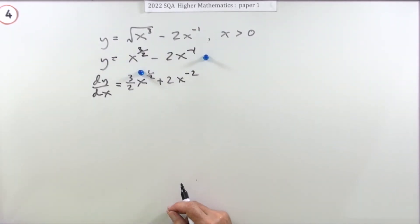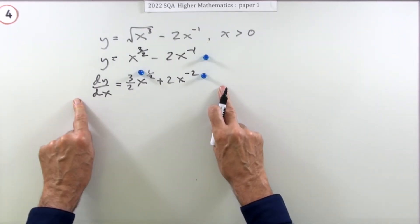You get one mark for each of the differentiations. And that's all that's required in the marking scheme.